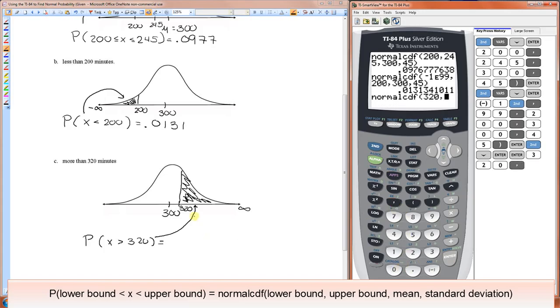This time, the upper bound is positive infinity, and we'll represent that by 1 e99, which is 1 times 10 to the 99th power. So a 1 followed by 99 zeros is about as close to infinity as your calculator could handle. And then you put the mean and the standard deviation.